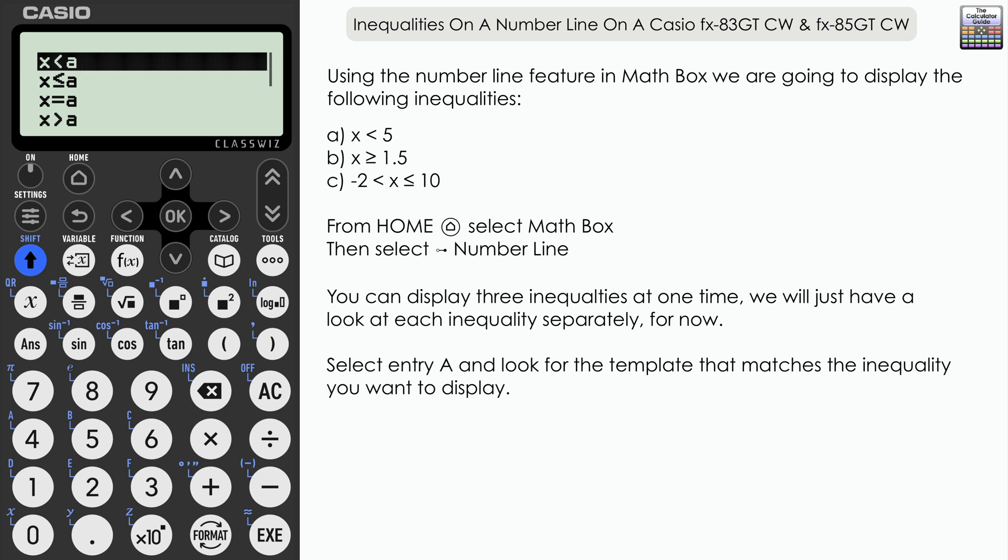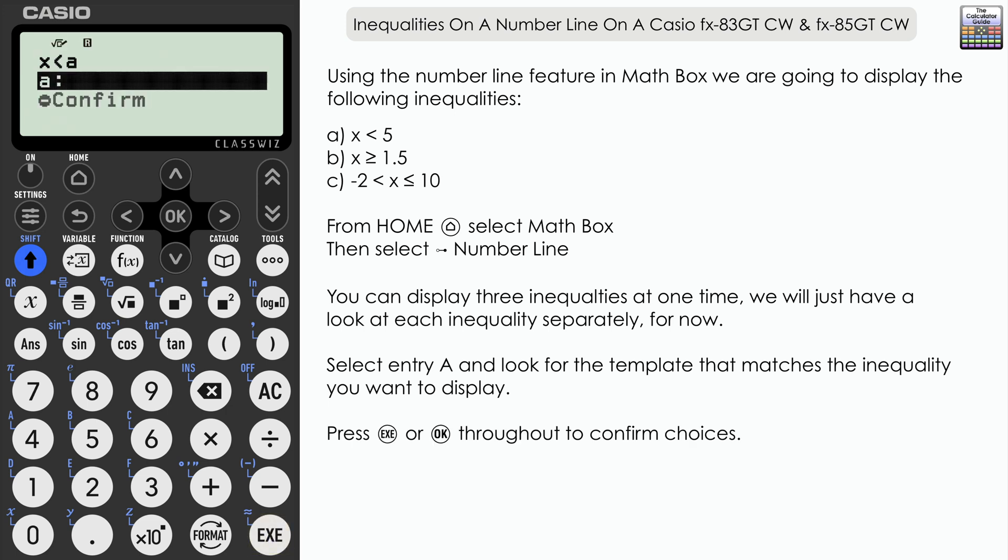So let's press execute and we just want to input the A value. Well in this case it's 5, and then just execute once more to confirm. We're only going to do one at a time, so let's scroll down to execute to produce the number line.